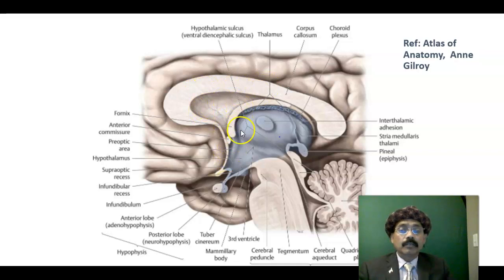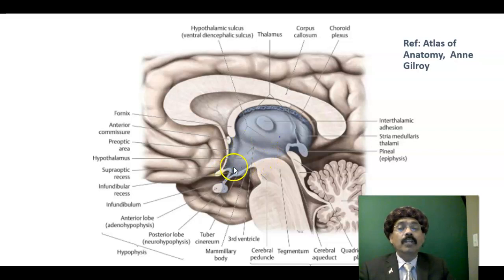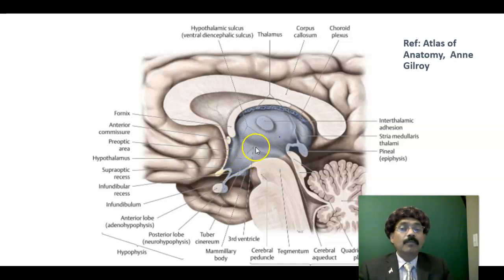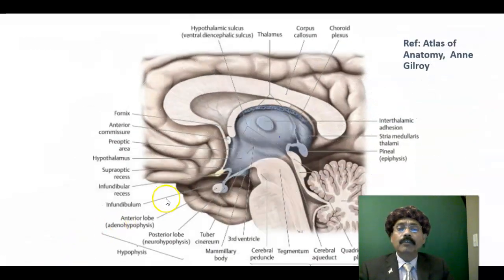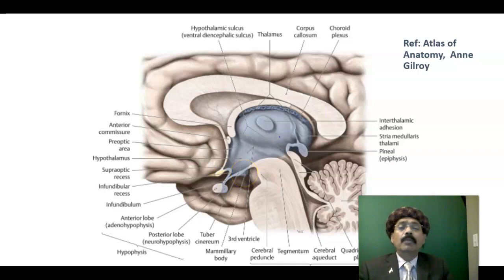The thalamus is the major sensory relay station. The hypothalamus controls all body systems: appetite, diurnal rhythm, endocrine functions, and temperature regulation. The posterior pituitary and anterior pituitary are here, connected by the pituitary stalk. The mammillary body is part of the hypothalamus and is important for memory — it is lost in chronic alcoholism.